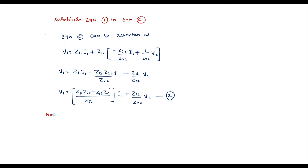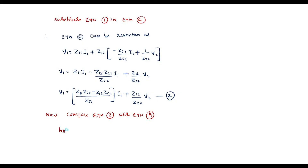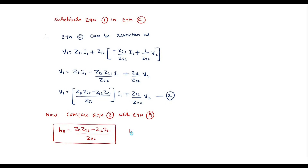Comparing equation 2 with equation A, since it is of the form V1 = H11·I1 + H12·V2, the coefficient of I1 is H11 and the coefficient of V2 is H12. Therefore, H11 = (z11·z22 − z12·z21)/z22, and H12 = z12/z22.